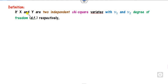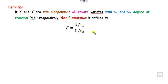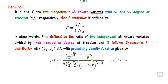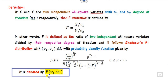What is the definition of the F distribution? If you have two independent chi-square variates x and y with degrees of freedom mu 1 and mu 2 — x follows chi-square with degree of freedom mu 1, y follows chi-square with degree of freedom mu 2, and both are independent — then the F statistic is defined as the ratio of x divided by mu 1 to y divided by mu 2. You can denote this as F(mu 1, mu 2).